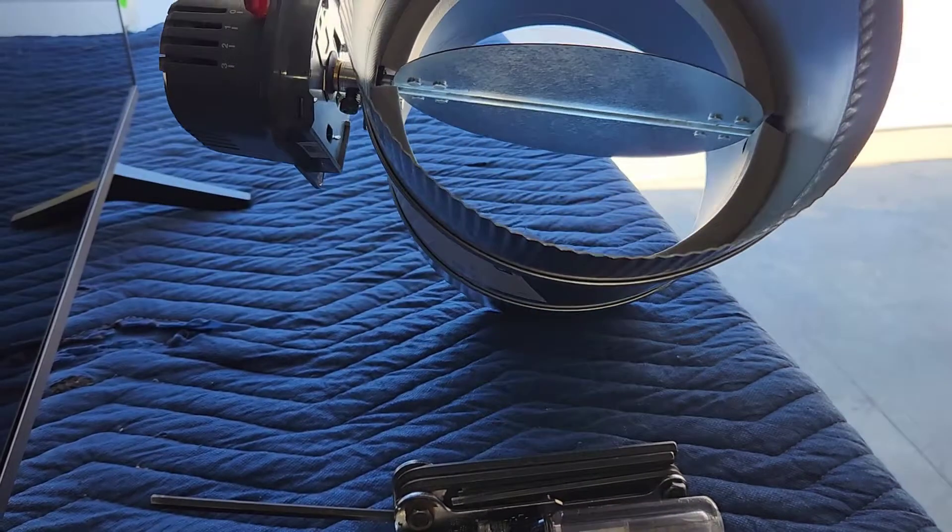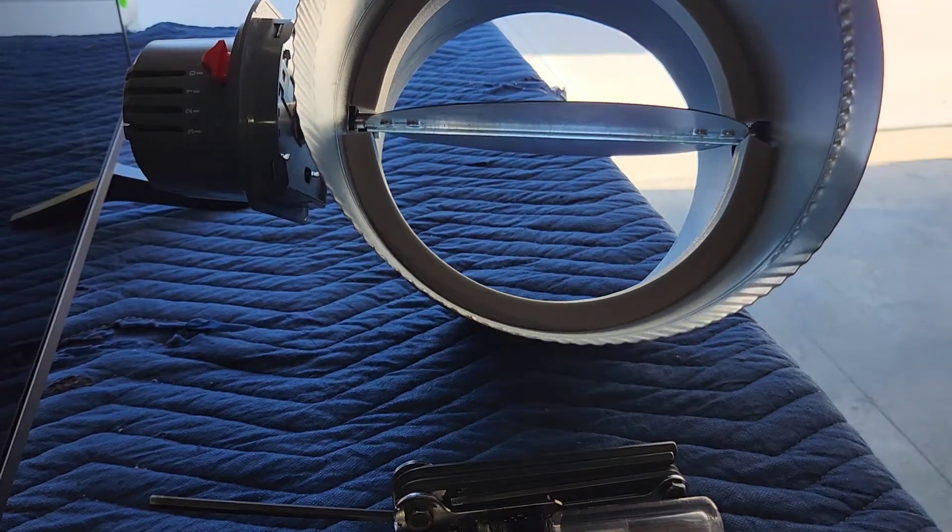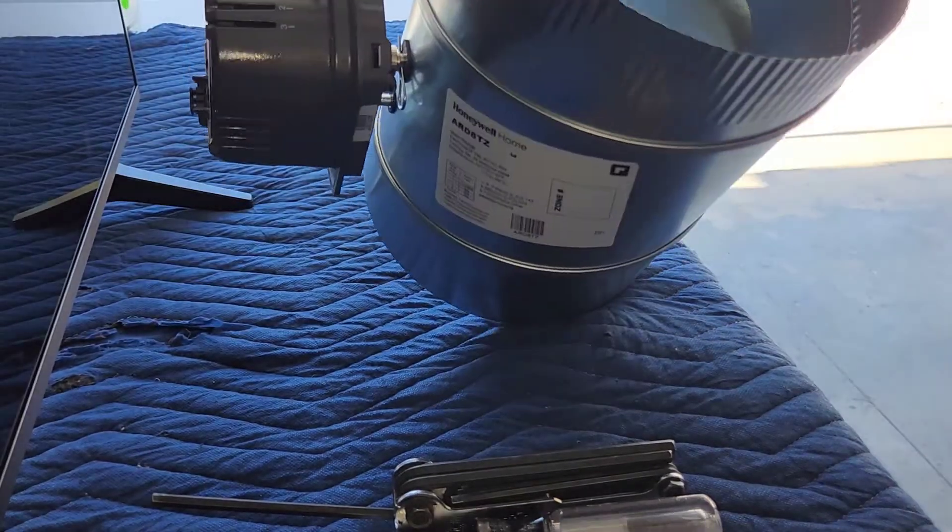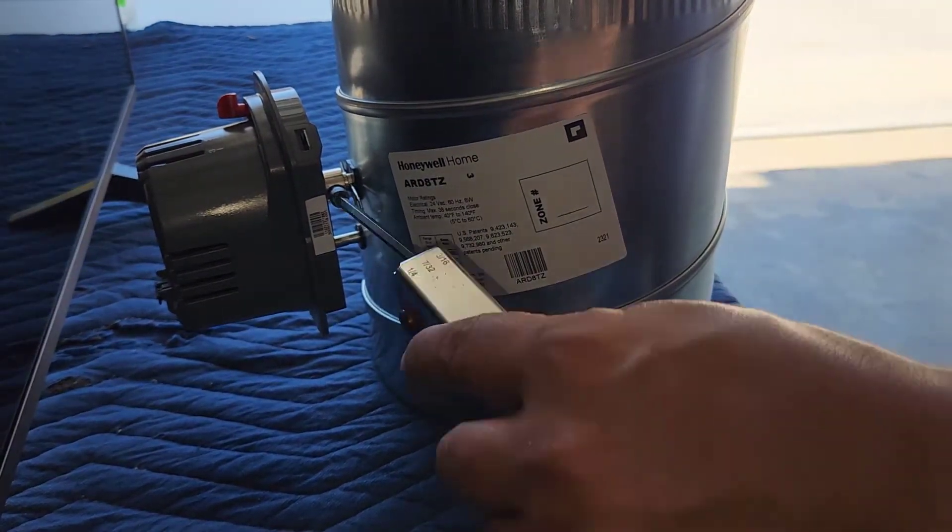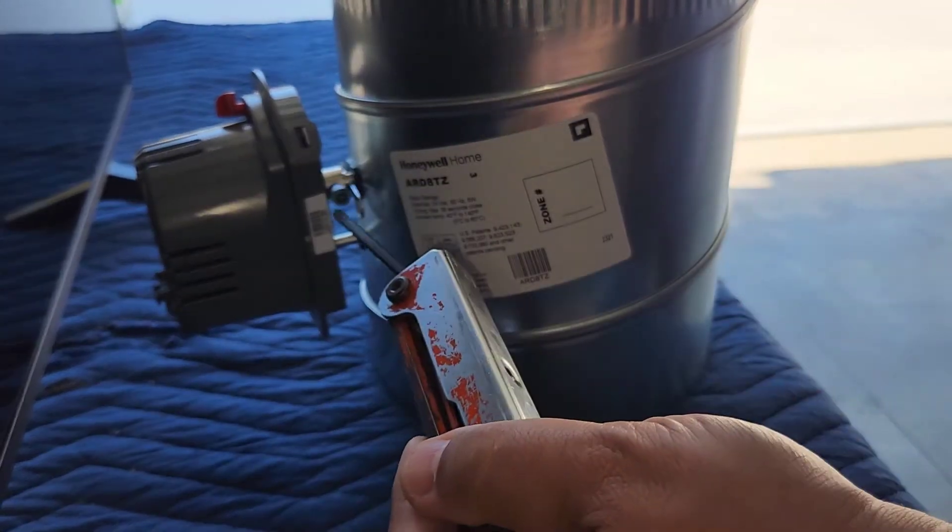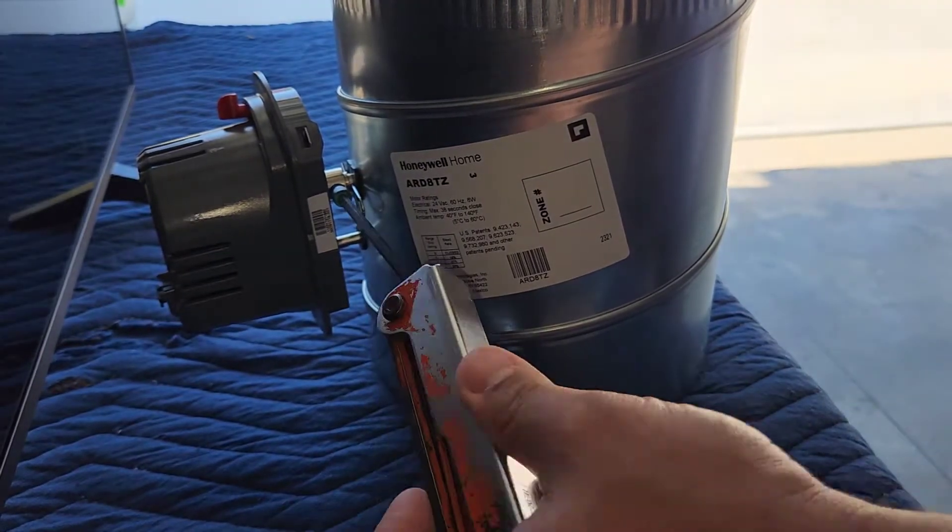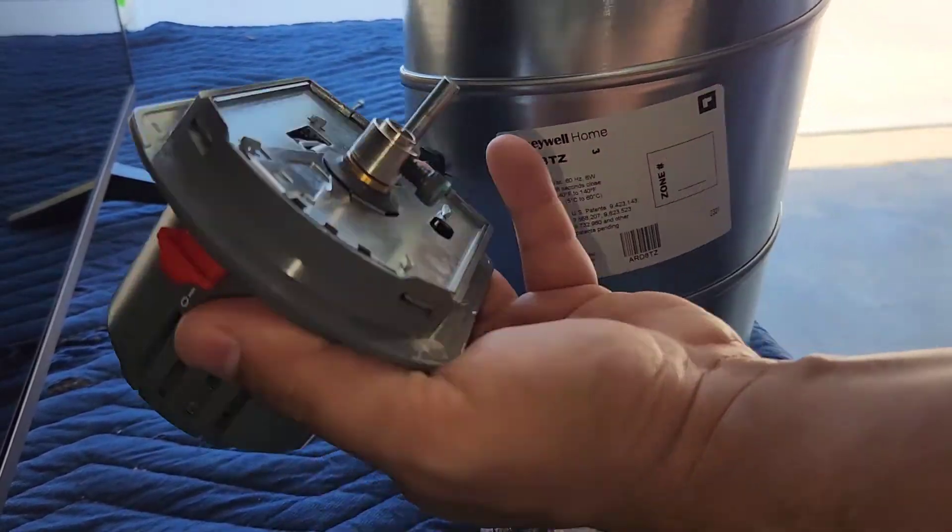So the goal here is to make this damper normally closed where it powers it open. So here's what we're going to do. First thing we've got to do is loosen this set screw. So take your Allen wrench and you don't need to take it off. You just need to loosen it enough where the actuator is not bound to the shaft anymore. And this whole thing will slide off.